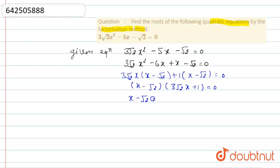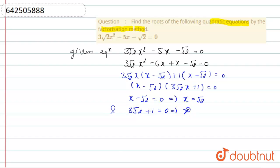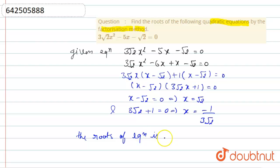So now if we solve x minus √2 equal to 0, then we will find x equal to √2. This is the one root. And if we solve 3√2·x plus 1 equal to 0, then we will find the other root is minus 1 upon 3√2. So the roots of the equation are √2 and minus 1 upon 3√2.